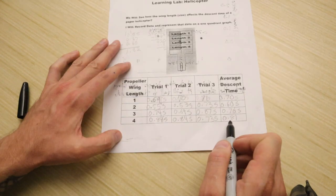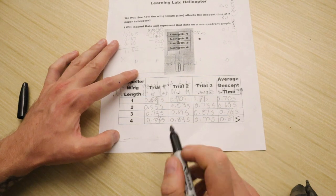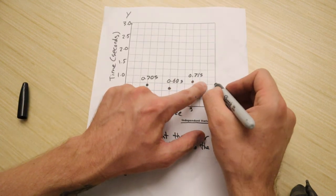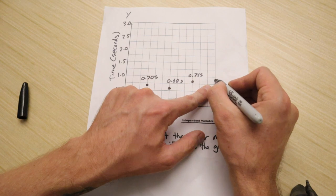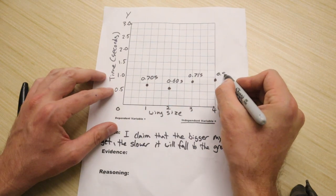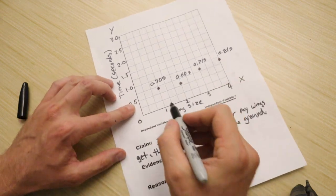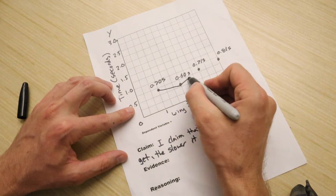And then wing size 4, 0.81 seconds. Okay, and it's going to be a little taller than that line. So maybe I'm going to guess it's maybe like right about there. 0.81 seconds. Then connect your dots. Boom. Boom. Boom.